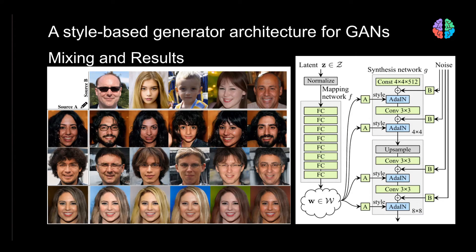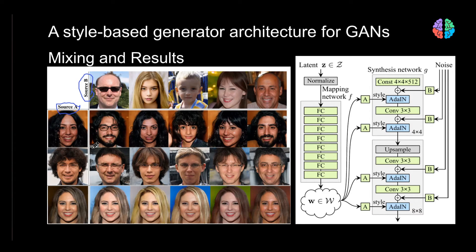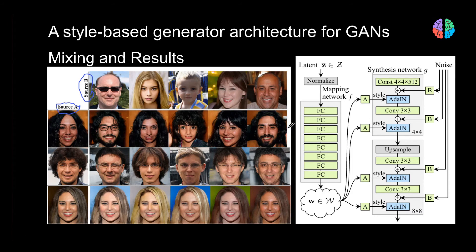In another interesting result, they generate images from source A and source B, then combine their latent vectors at different scales. When mixing coarser-level latent vectors of A with those of B, changes appear in pose and hairstyle. When mixing finer-level details of the latent vectors, only color scheme and microstructures change — very subtle differences compared to the coarser-level feature changes.